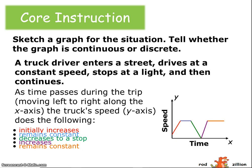So that graph may look something like this. Over time, the speed increases, remains constant, decreases, increases, remains constant. Perhaps there's a traffic light here.